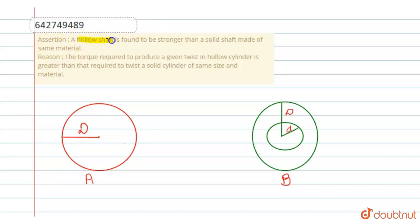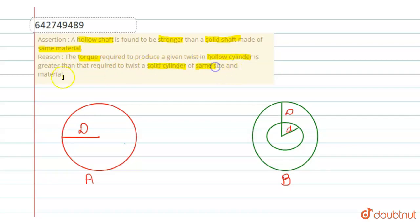Hello students, here is an assertion-reason question. Assertion: A hollow shaft is found to be stronger than a solid shaft made of the same material. Reason: The torque required to produce a given twist in a hollow cylinder is greater than that required to twist a solid cylinder of the same size and material. It is an assertion-reason question with two statements, so we will discuss them one by one.